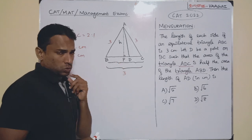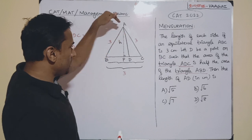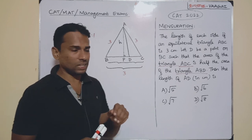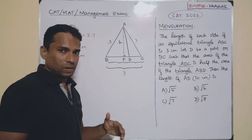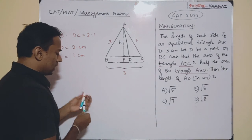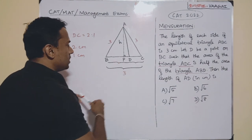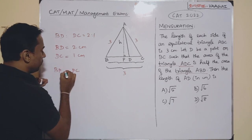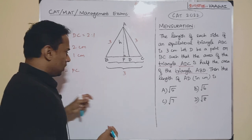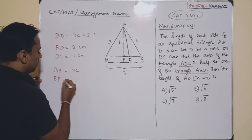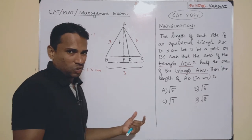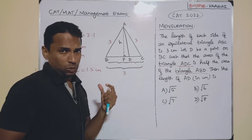Now, let us think about point P, which is the foot of the perpendicular height. Since this is an equilateral triangle, the height exactly bisects the base into two equal parts. So BP and PC are both equal to half of three, which is 1.5 centimeters each.